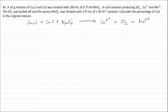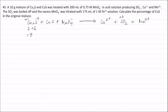In Cu₂S, the oxidation number of copper is +1 and sulfur is −2. When Cu₂S changes to Cu²⁺, the oxidation number of each copper atom changes by 1, so 2 copper atoms change by 2 total. The oxidation number of sulfur changes from −2 to +4 in SO₂, a change of 6. Therefore, in Cu₂S the total change in oxidation number is 2 + 6 = 8. The equivalent weight of Cu₂S is its molecular weight (159) divided by 8.